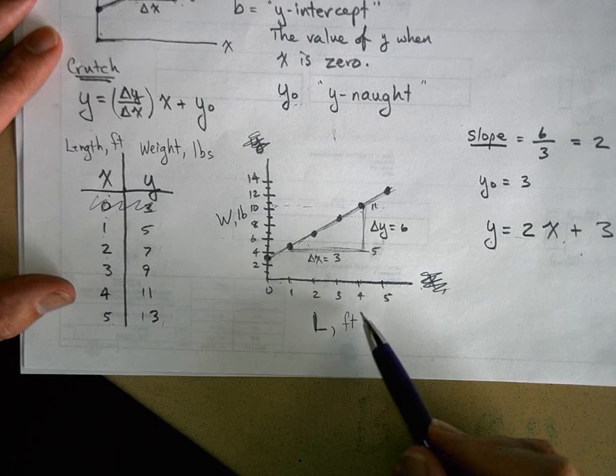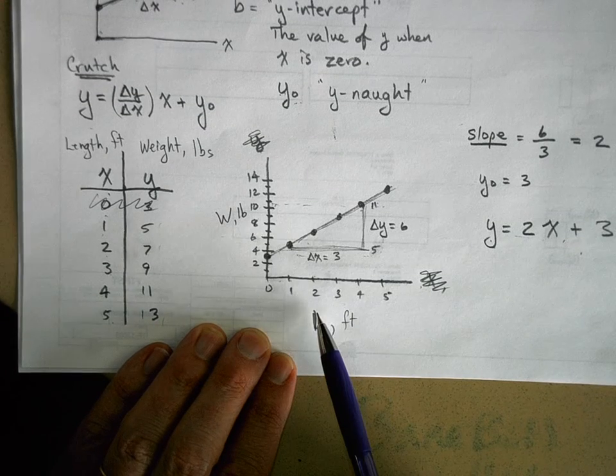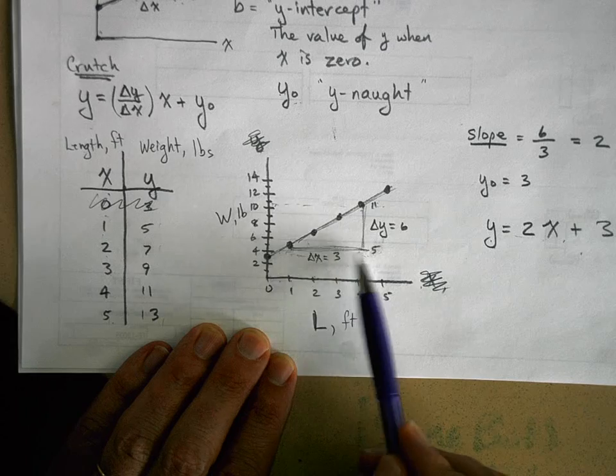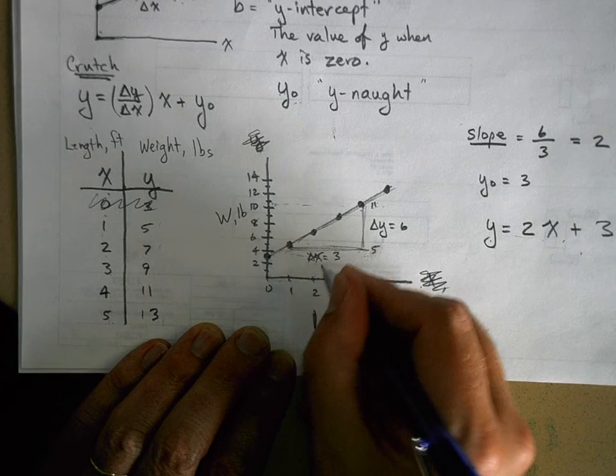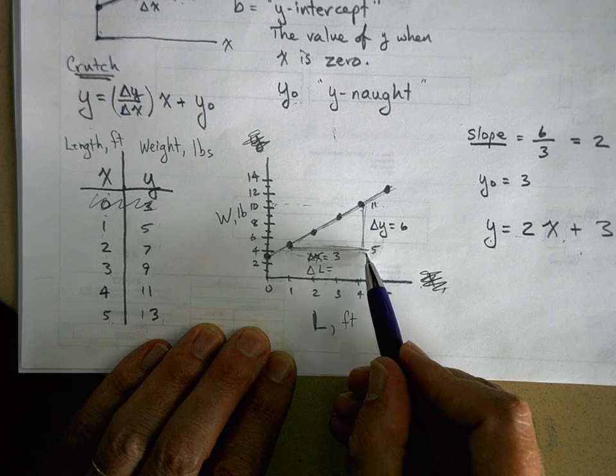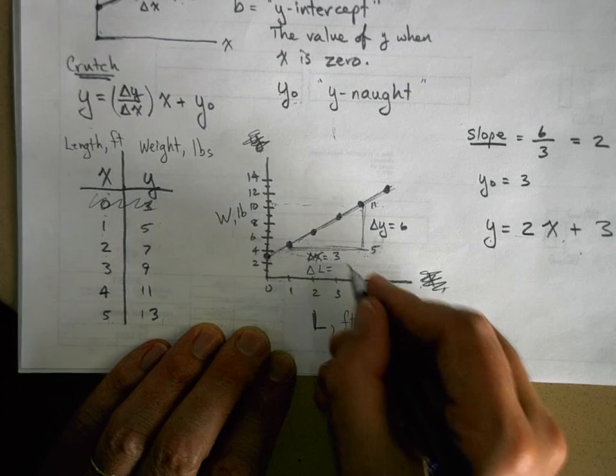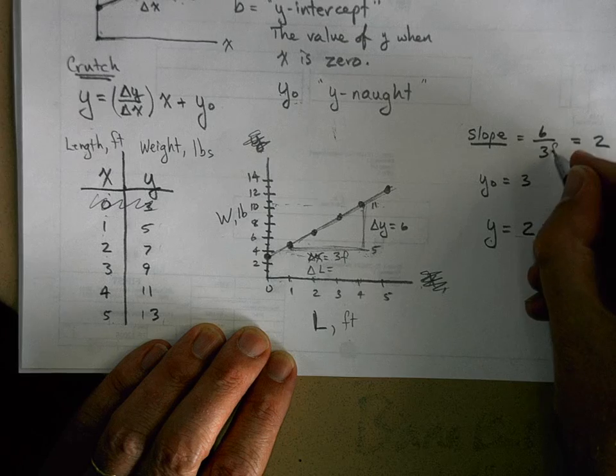So now when I go up here and I say, well, delta x, or actually I should call it what? Delta, I should call it delta L equals three, what? From here to here, three feet. So I'm going to go three feet up here.